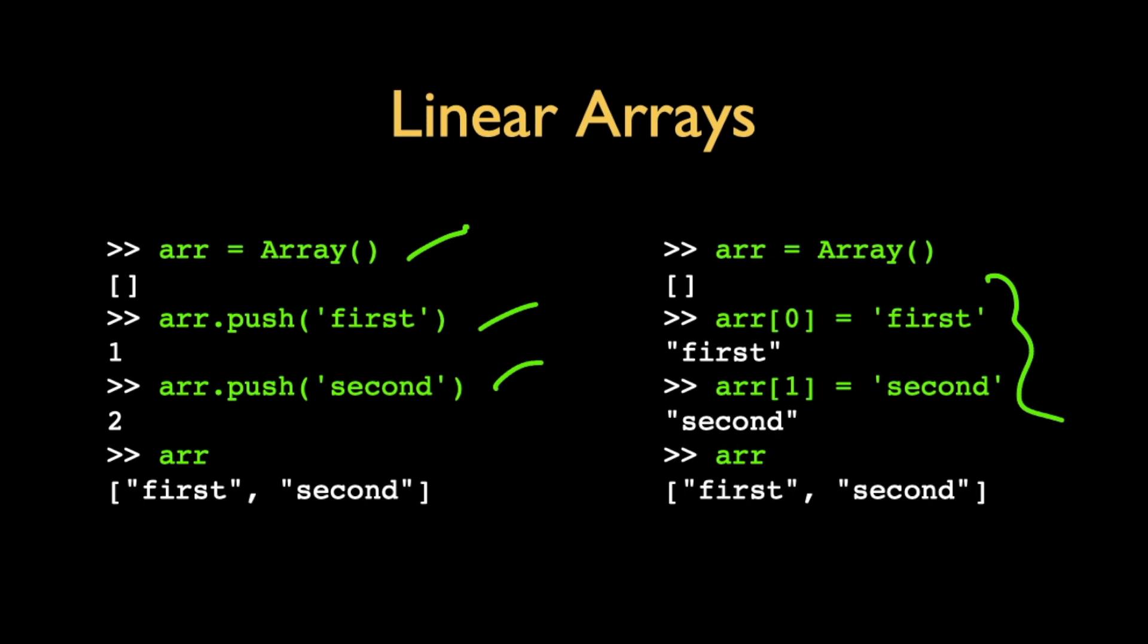And remember, in JavaScript, arrays are arrays. They're not dictionaries. They are lists. In Python, Python has lists and dictionaries. And JavaScript has arrays and objects.